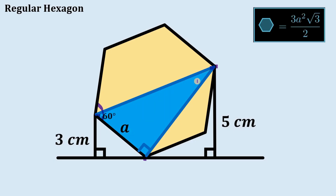The other angle is obviously 30 degrees, so we have a 30-60-90 right triangle. The side opposite 30 degrees is a, therefore the measure of the side opposite 60 degrees is simply equal to a times square root of 3.